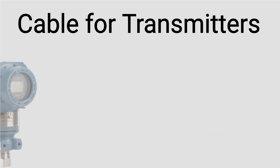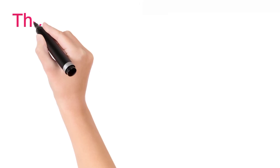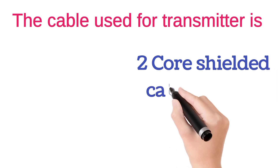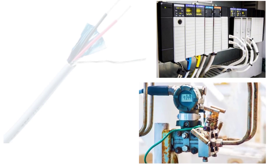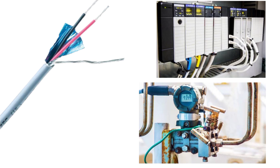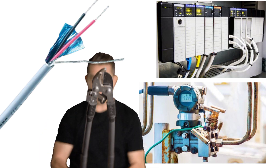Now we will see the cable for transmitters. The cable used for pressure transmitters, level transmitters, and some other transmitters is a 2-core shielded cable, also known as a pair cable. Between the PLC and transmitter, a pair cable is used — one wire is connected on the positive terminal and the other on the negative terminal. The shield connection is optional; we can connect it or cut it.